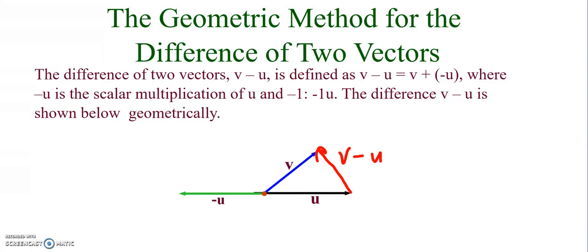So one thing with subtraction is the order in which you draw the vector matters only because it changes the direction. So this is v minus u because I drew this so that the tail of this vector is at the tail of v and the initial side of this vector is at the initial side, or I'm sorry, is at the tail of u.